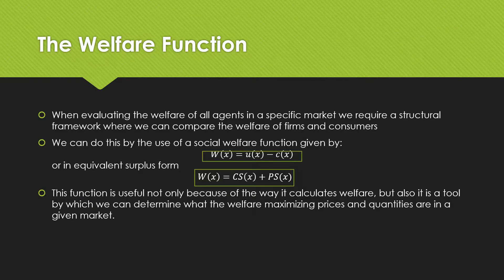When evaluating the welfare of all the agents in a specific market, we require a structural framework where we can compare the welfare of firms and consumers. We can do this by the use of a social welfare function given by W(X), which is the welfare in the market for good X, equal to the utility from the consumption of good X minus the cost required for good X. Or in equivalent surplus form, our welfare is equal to the sum of the consumer surplus and the producer surplus.